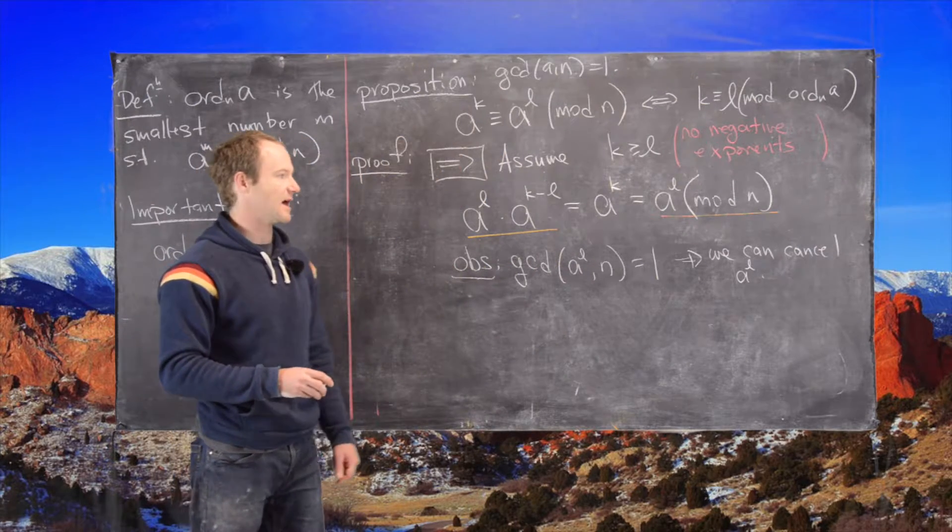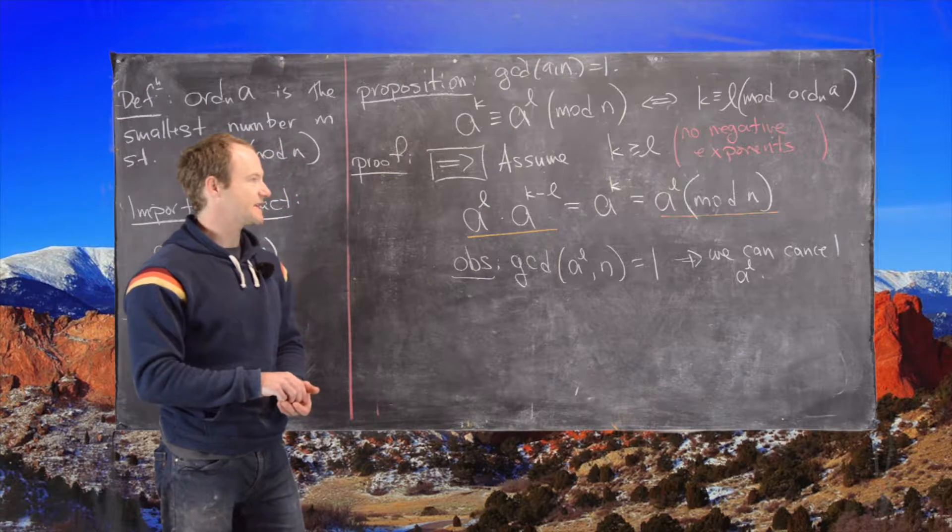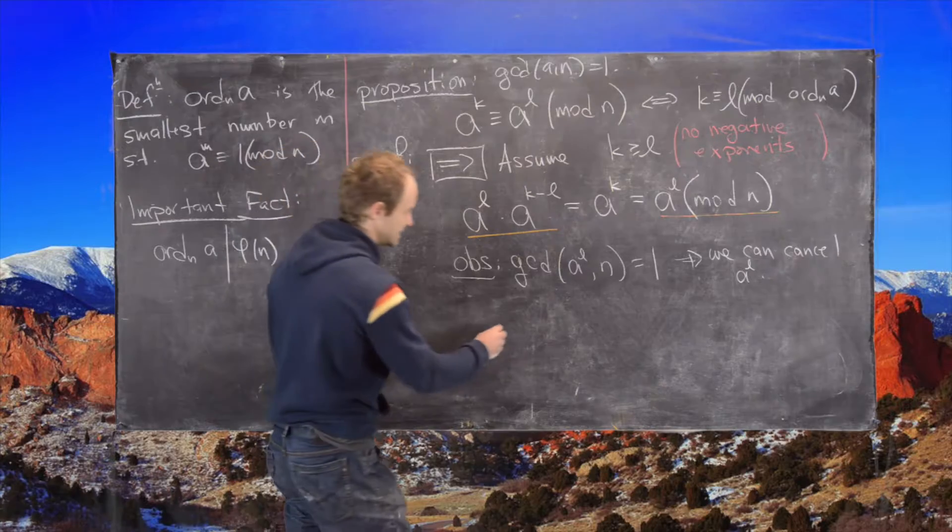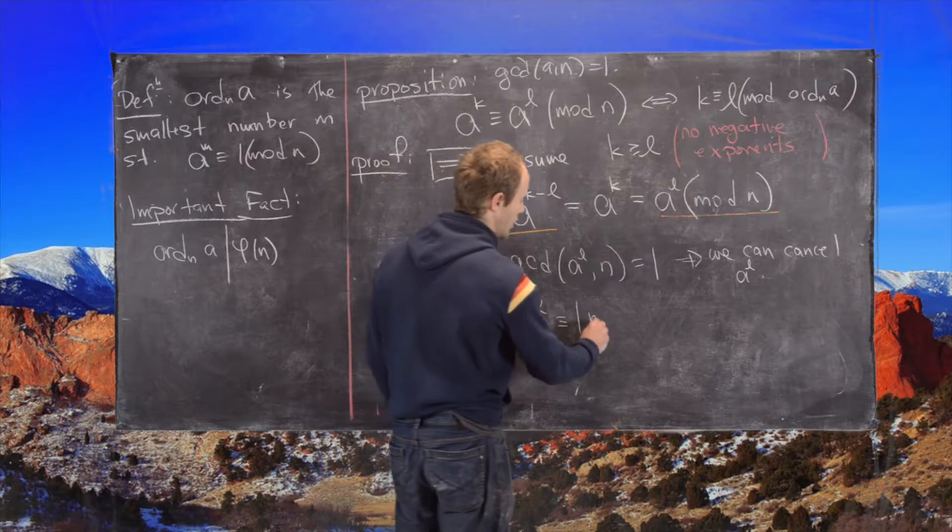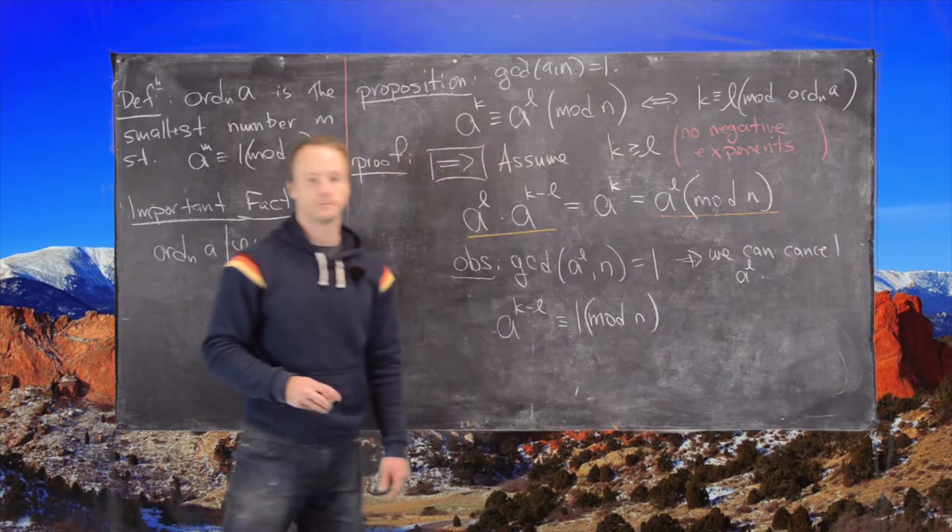In other words, multiply by the modular inverse of a to the l. So if we cancel a to the l from both sides, that turns this equivalence into a to the k minus l is congruent to one mod n. Great.